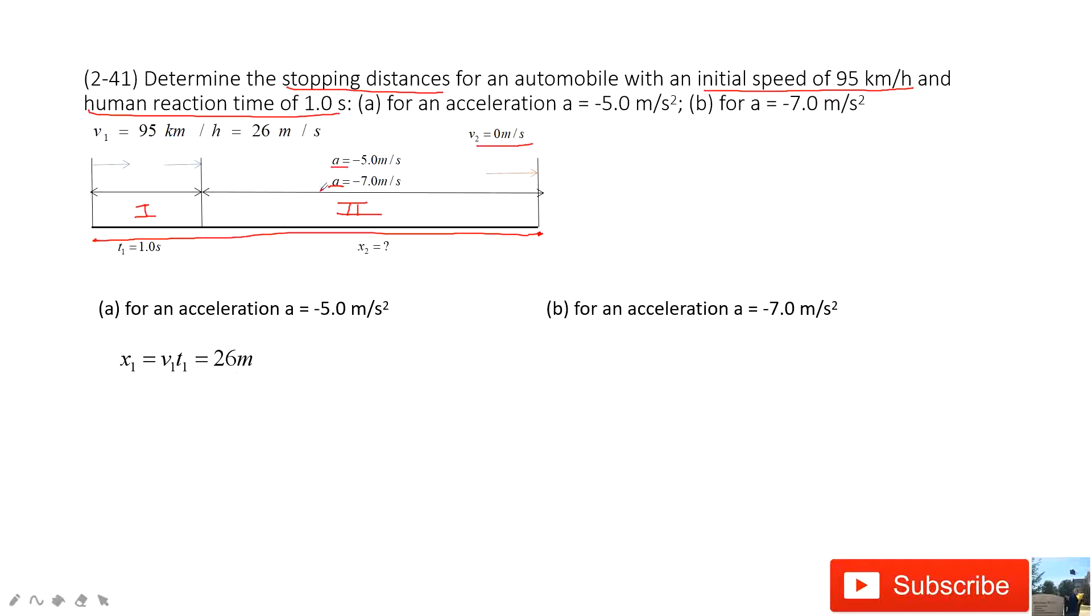And then in the first case, acceleration is negative 5.0 meter per second squared. We can see we know the initial velocity v1, we know the final velocity v2, and we know acceleration. The displacement is very easy to get. Use our favorite equation there and we find it is 67.6 meters. Then the total stopping distance is x1 plus x2. We get it.